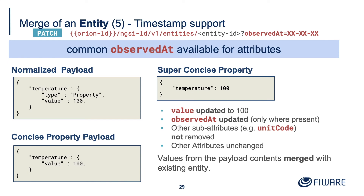ObservedAt is fundamental to NGSI-LD temporal operations. If you just put in a merge patch of any of the values on screen, the observedAt would not change, and that could result in effectively corrupt data in your system because you don't know when the value changed. So if you use this endpoint, you've got to be careful: if you want to maintain temporal data you've got to add in the observedAt. It will only update observedAt where it already exists — so if a name attribute doesn't have an observedAt but your temperature does, only the temperature's observedAt gets updated. Other sub-attributes are unaffected; other attributes unchanged.